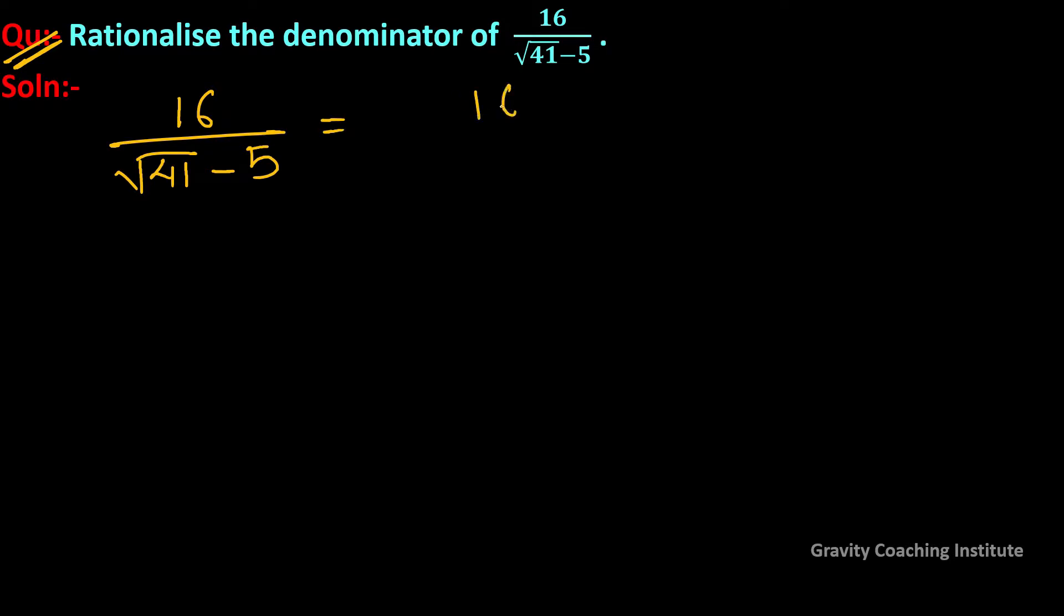We have 16 upon root 41 minus 5. To rationalize the denominator, we multiply by the conjugate root 41 plus 5.